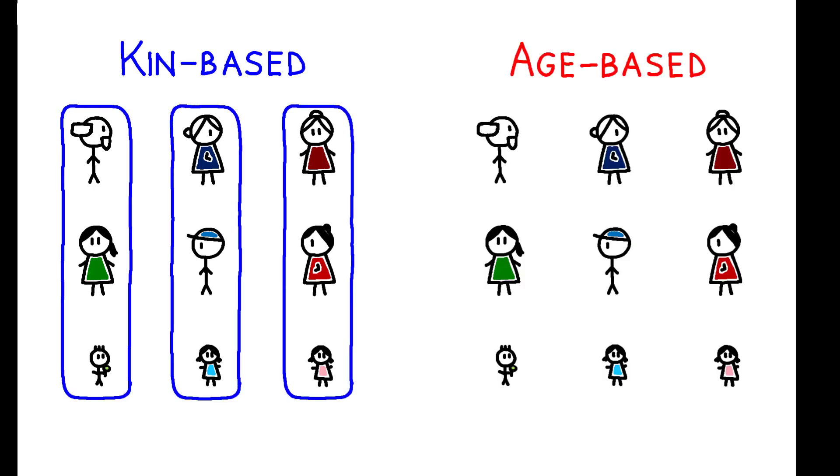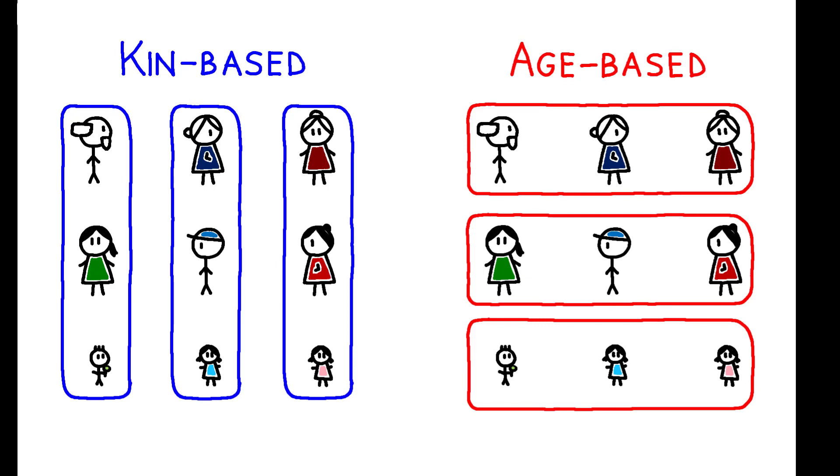But in the latter, the primary social unit is the age set. This is a group of individuals of similar age who are initiated into adulthood at the same time.